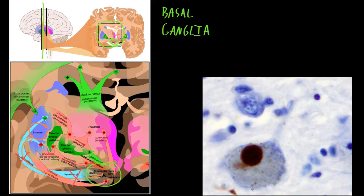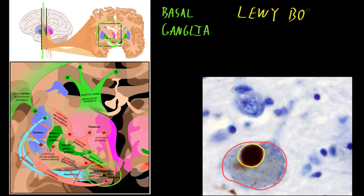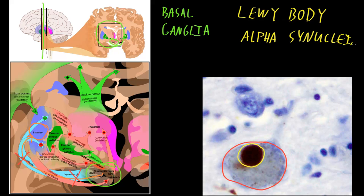When we look under the microscope, we can see diseased neurons that are degenerating in the substantia nigra, and they often contain abnormal structures called Lewy bodies. These abnormal structures are visible inside the degenerating dopaminergic neurons of the substantia nigra in Parkinson's disease. Lewy bodies primarily contain a protein called alpha-synuclein. This is a normal protein present in brain cells under normal conditions, but in Parkinson's disease it appears that alpha-synuclein is not cleared normally from neurons, and it clumps together inside the neurons to form Lewy bodies.